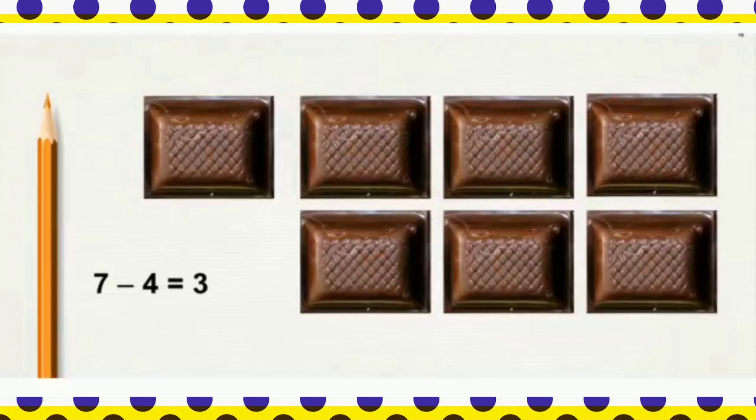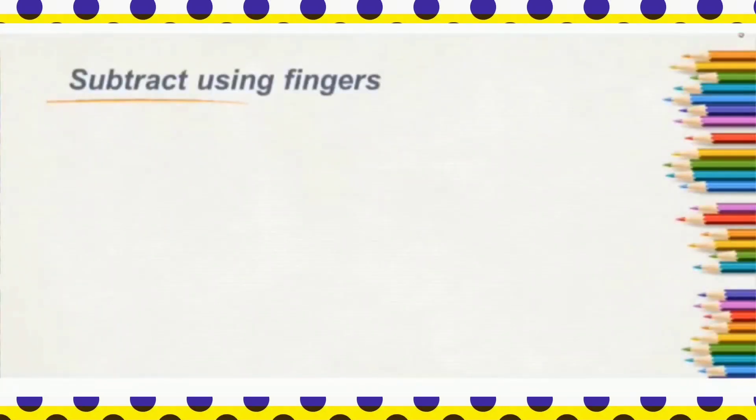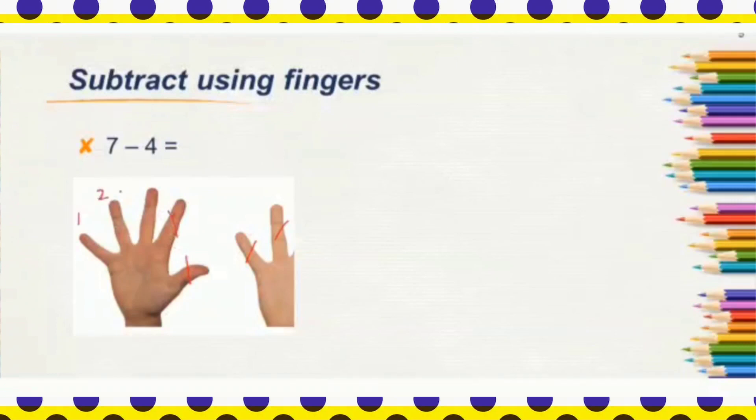Next, we will understand to subtract using fingers. Here 7 minus 4 means from 7 we will have to take away 4 fingers. So, here are 7 fingers. From 7 fingers, we will have to take away 4 fingers. 1, 2, 3, 4. So, how many fingers are left? 1, 2, 3. So, difference of 7 minus 4 is equal to 3.